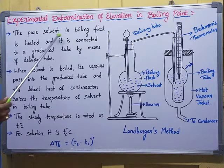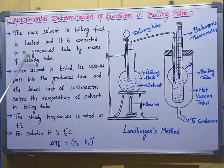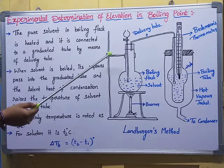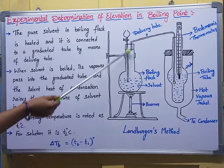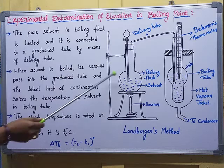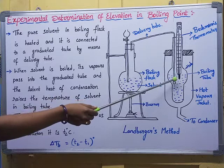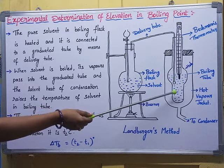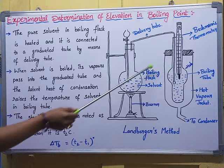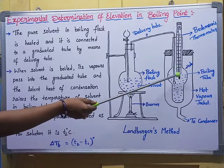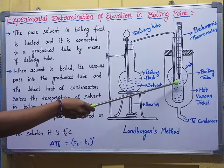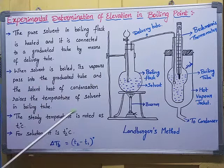Now let us see the procedure. The pure solvent in the boiling flask is heated and connected to the graduated tube by means of a delivery tube. When we heat the pure solvent, vapors are generated and passed to the next container through the delivery tube. These boiling vapors condense in this container through the process of latent heat of condensation, raising the temperature of this solvent. The solvent also converts into vapors at that point, and the boiling point is recorded by the thermometer as T1 degrees centigrade — the steady temperature of the pure solvent.